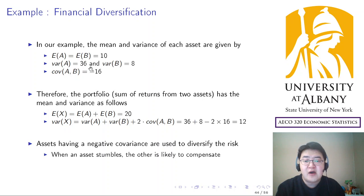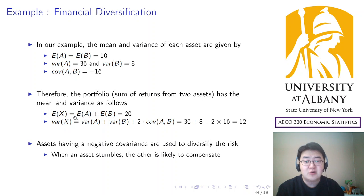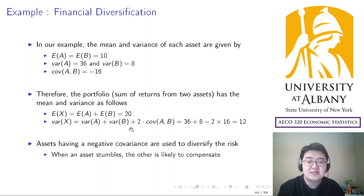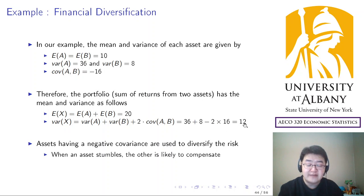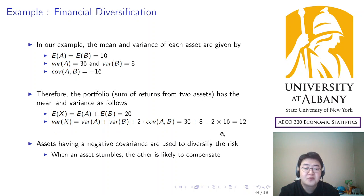We consider the portfolio X equals A plus B. Its expected value is simple — the expected value of the sum equals the sum of expected values, which is 20. But variance is not that straightforward. The variance of the sum equals the sum of variances plus two times the cross product. Plugging in the numbers: 36 plus 8 plus 2 times negative 16, you get 12. So 12 is the variance of the portfolio.